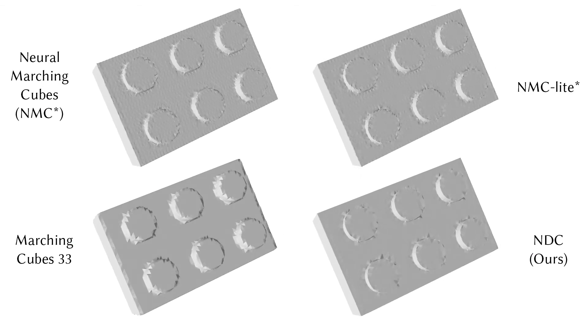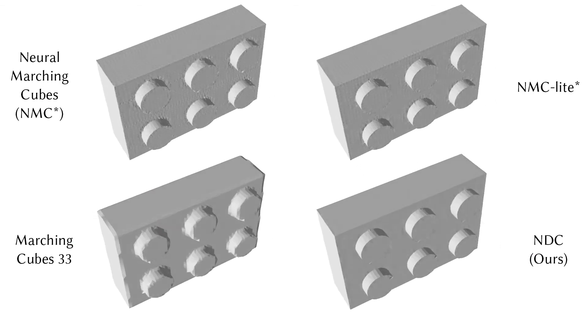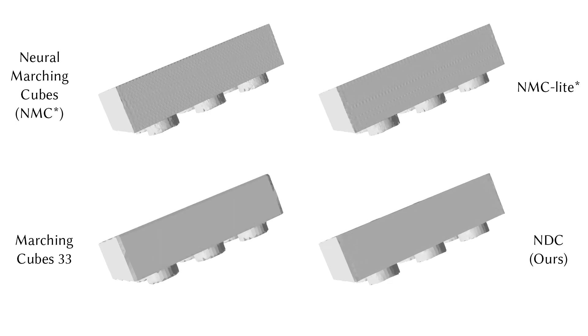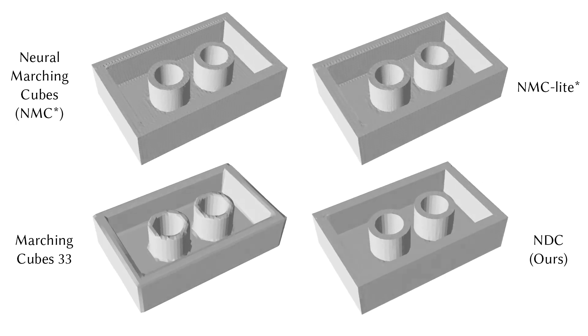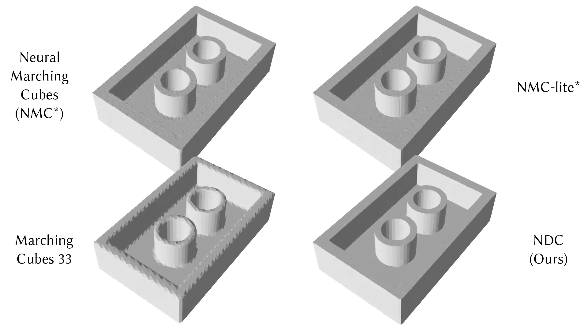Here, we test the robustness of the methods by testing them on a shape while rotating the shape inside a sampling grid. It clearly shows that NDC is the most robust compared to others.